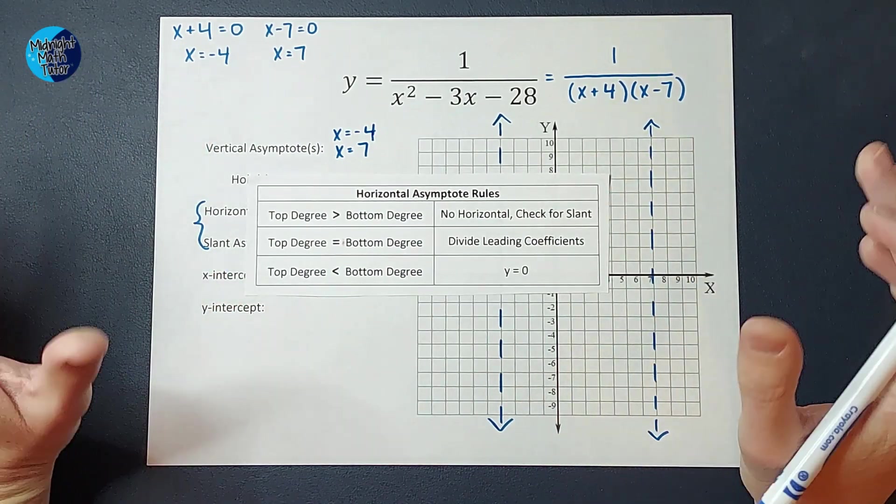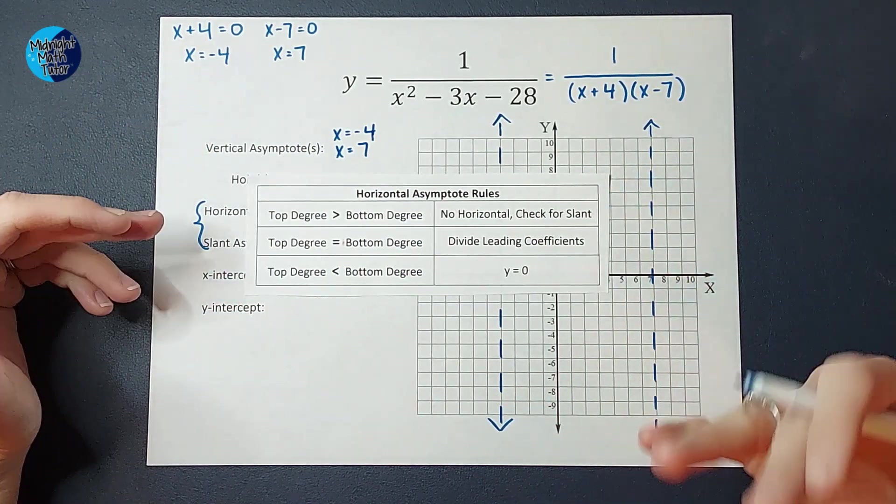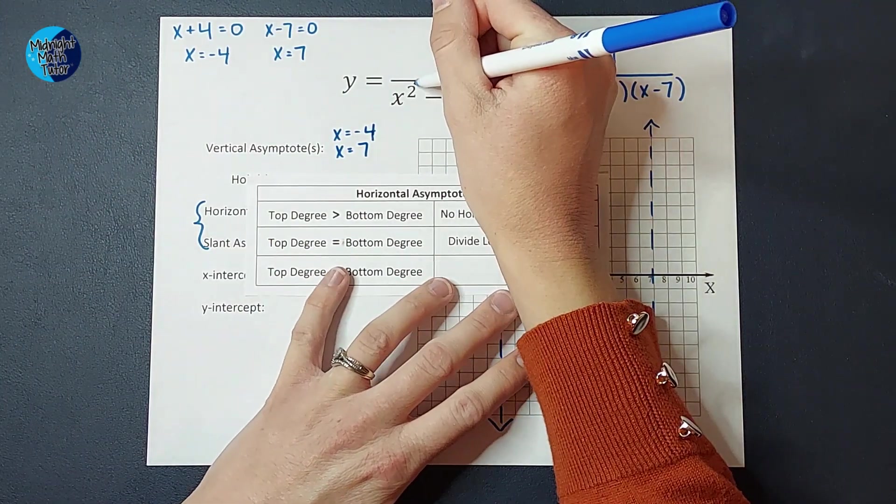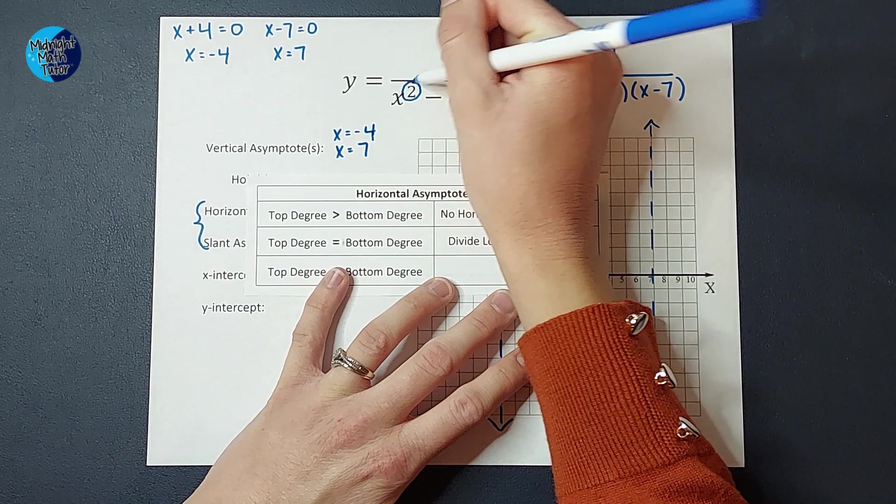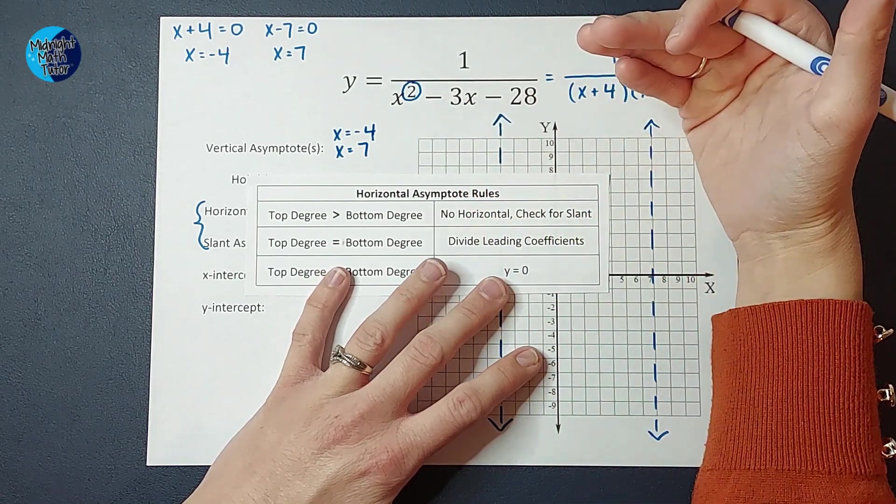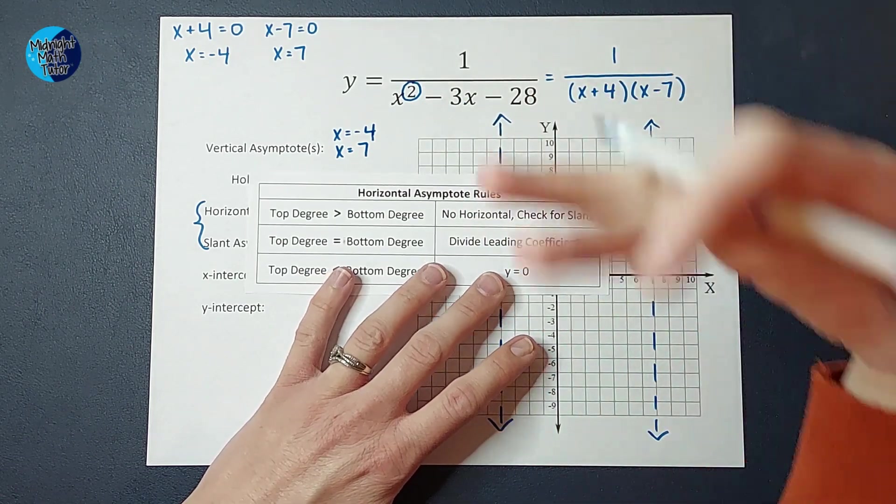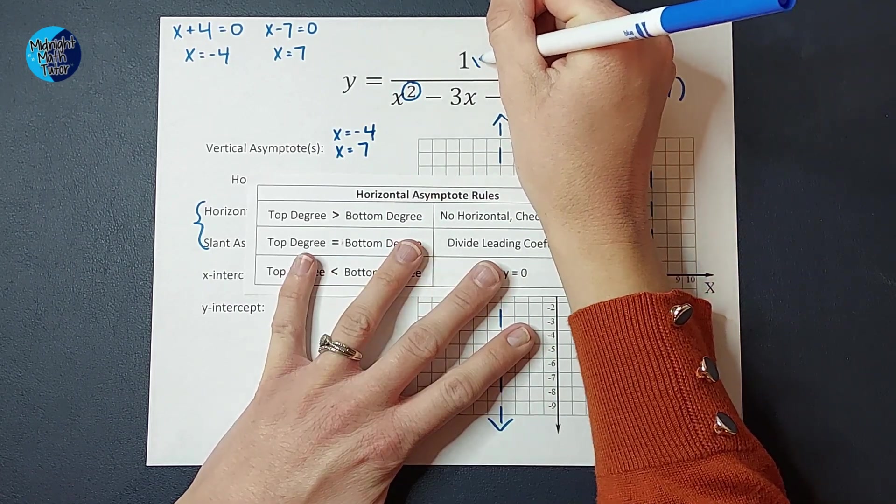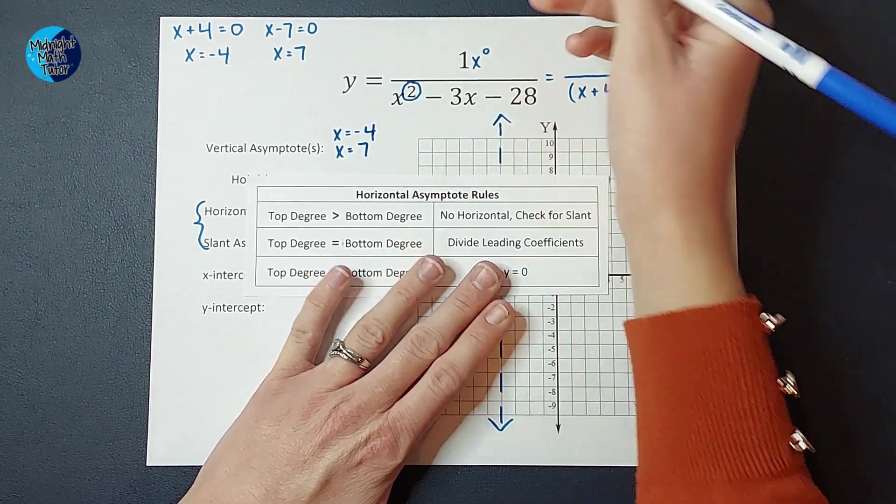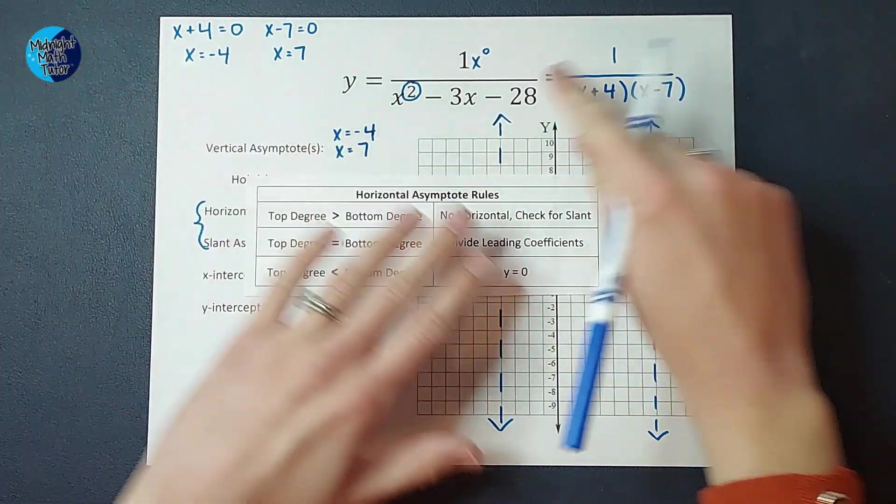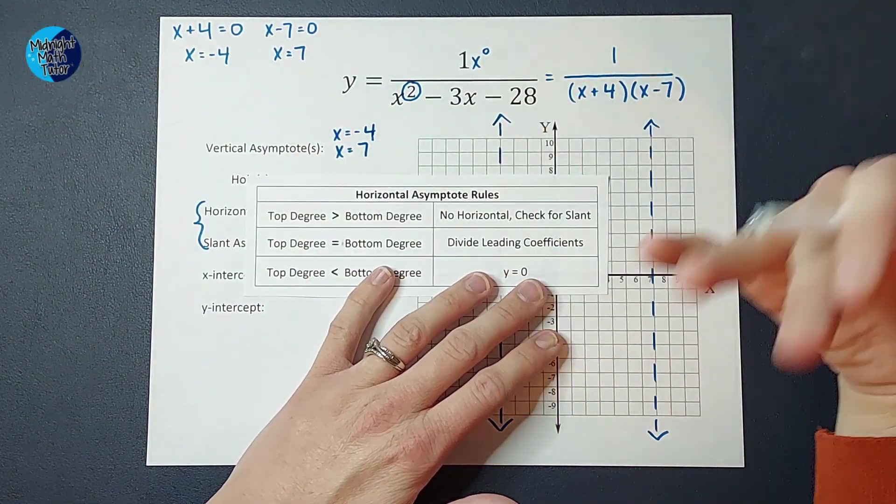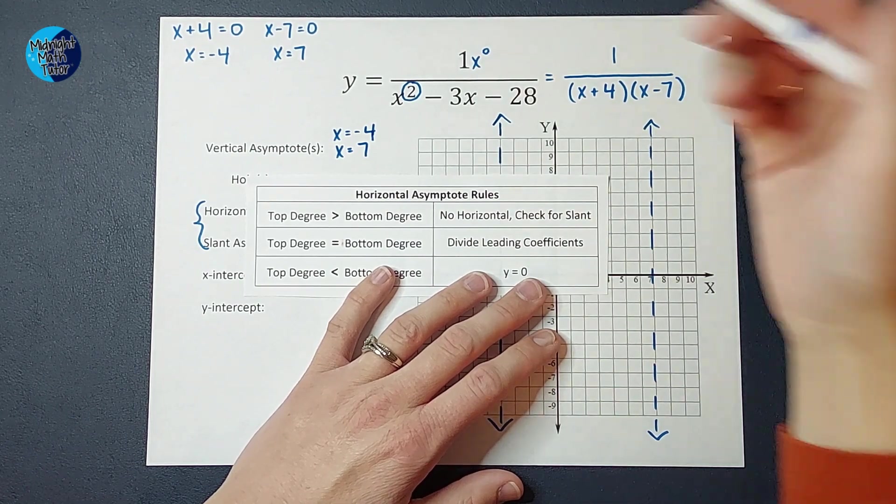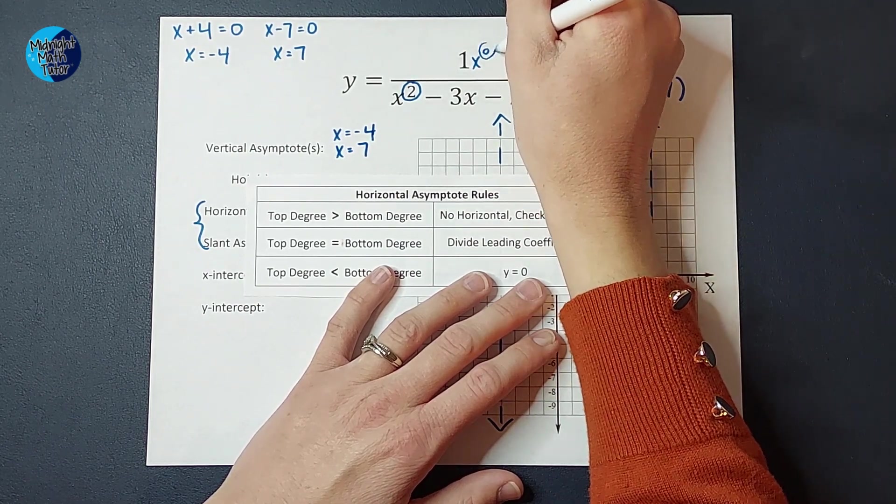For these, we look at our degree, which would be the biggest exponent on top and bottom. So on bottom, my biggest exponent, my degree, is 2. Now, on top, you're like, there's just a 1 up there. What does that even mean? So this could be 1 times x to the 0 power, right? Stay with me. Anything to the 0 power is just 1, which would be 1 times 1, which is 1. So basically, all I'm saying is your degree on top is 0. All right?